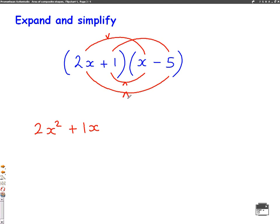Now the bottom one. 2x times minus 5. Well, 2 times minus 5 would give us minus 10. So 2x times minus 5 will give us minus 10x. And finally, the second top one. 1 times minus 5. Well, 1 times 5 is 5. So 1 times minus 5 will be minus 5.